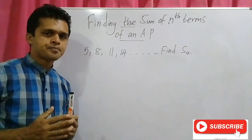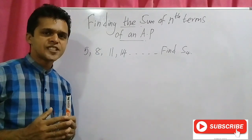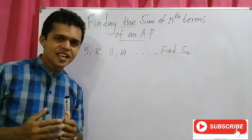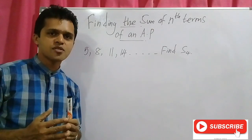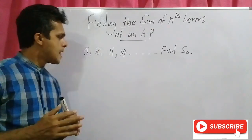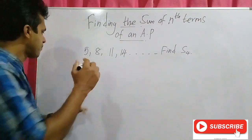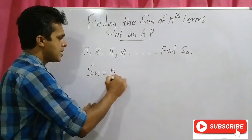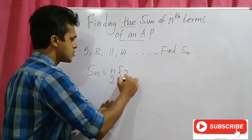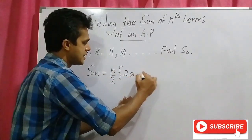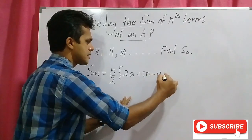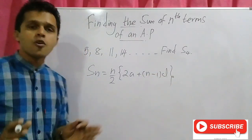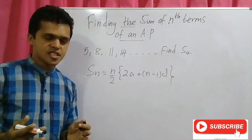This is the formula used to find the sum of n terms of an AP. The formula is: S_n equals n over 2 times 2a plus n minus 1 times d.